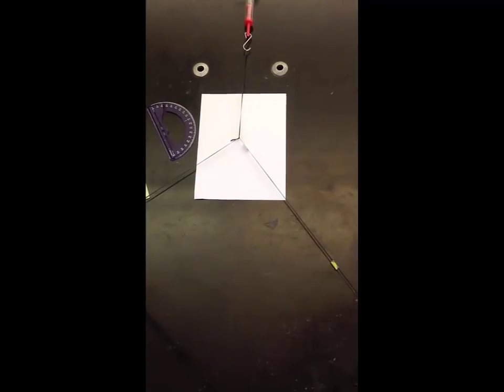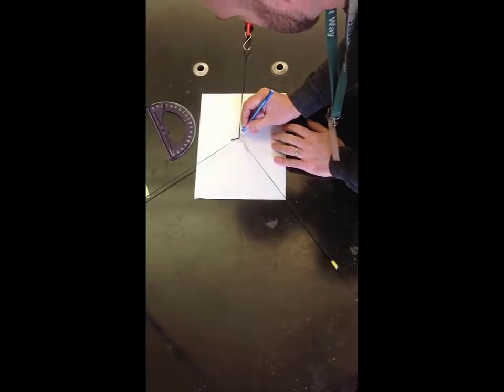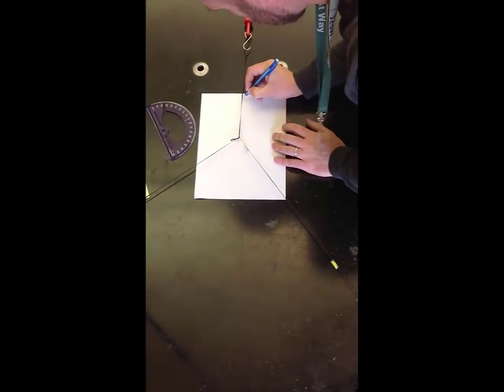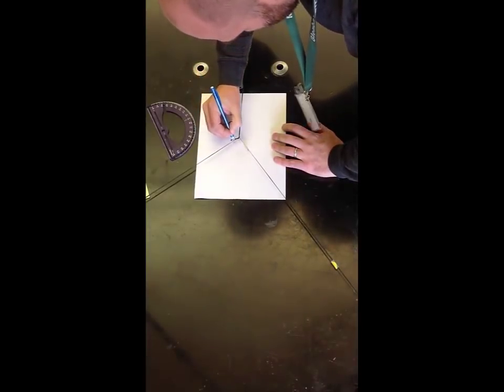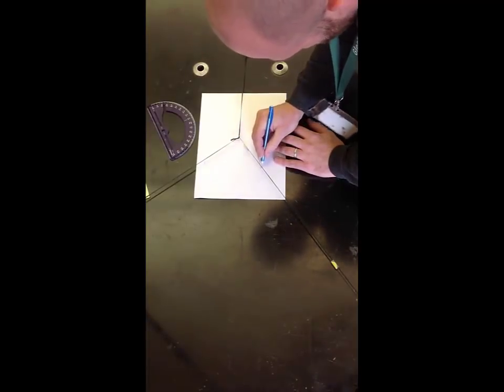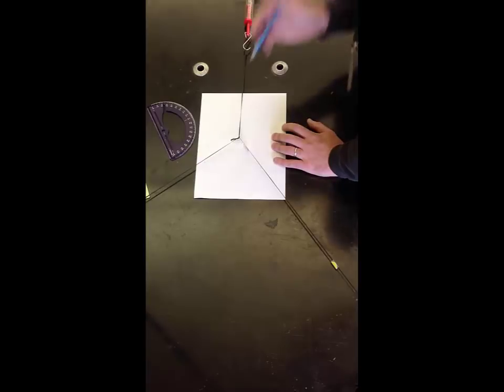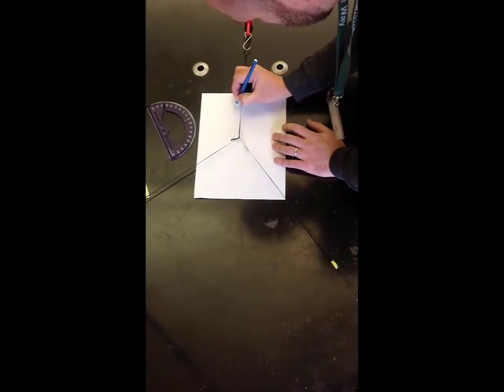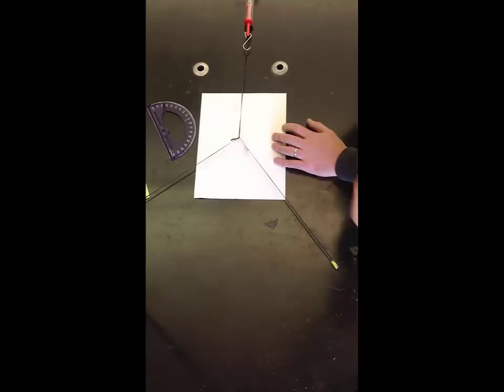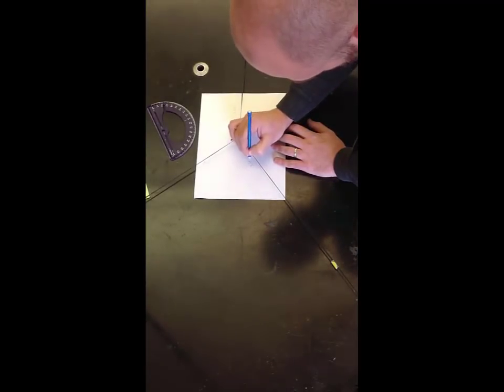So once you have your paper laid out underneath your strings you're going to take a look at your strings and gently line up two points underneath each string. Those two points once connected will give you your vectors representing the force in those springs. After you line up the points check each spring scale and carefully record the force in newtons along each set of points. You're going to need these forces later when you use your scale to convert those forces.